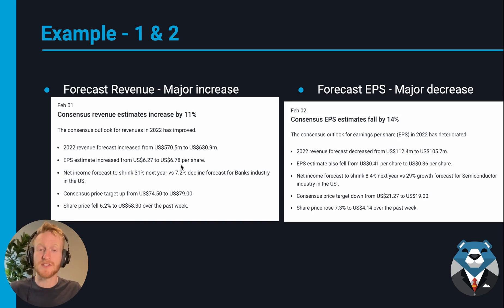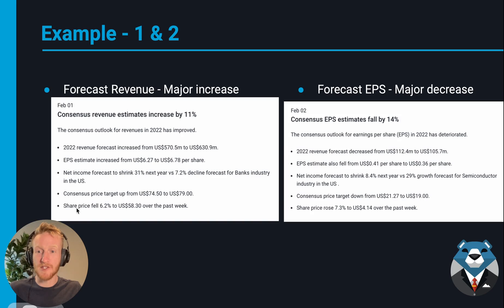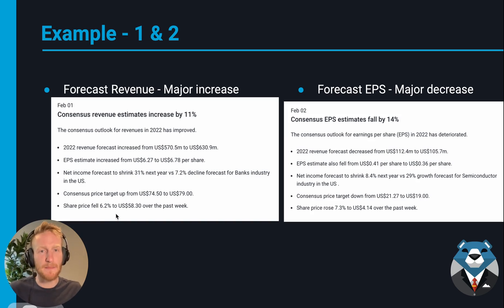The EPS estimate increased from $6.27 to $6.78, which is quite a big increase. Net income is forecast to shrink 31% next year versus a 7.2% decline forecast for the banks industry in the US — so it's expected to have a significant decline, but analysts no longer expect it to be as bad as before. The consensus price target moved up from $74.50 to $79. Despite this, the share price fell 6.2% to $58.30 over the past week, suggesting the market didn't react too positively to the news.